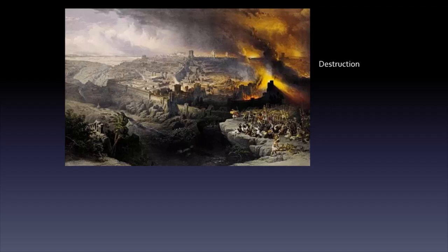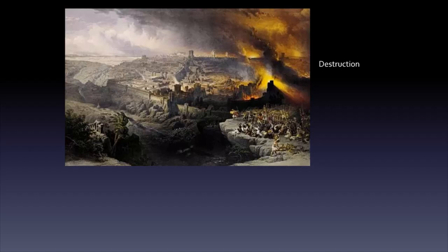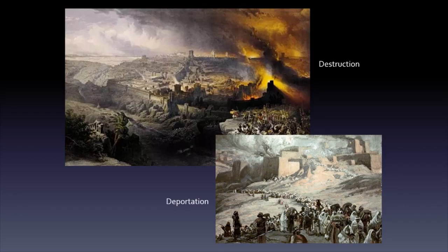Some of the surviving Israelites escaped to other countries. Some were forcibly taken to Babylon, which is modern-day Iraq. And some of the most helpless were simply left behind to fend for themselves. We see something of the life of the exiles in Babylon in the books of Daniel and Ezekiel. But what had happened to God's promises to Abraham, Moses, and David?